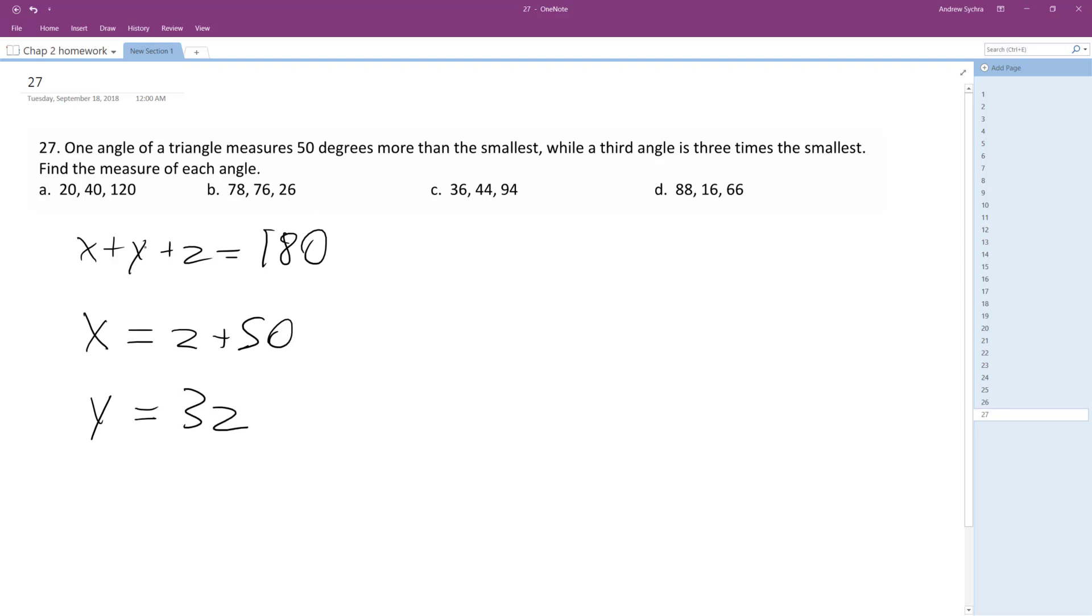Alright, we can just substitute this. We'll use the first equation, so we'll substitute Z in, so Z plus 50 plus 3Z, that's the sub for Y, plus Z is equal to 180.